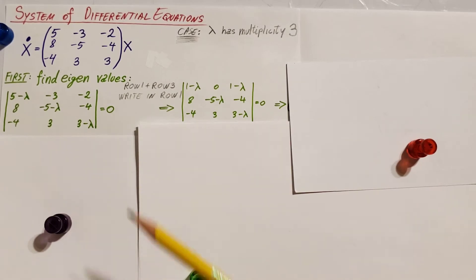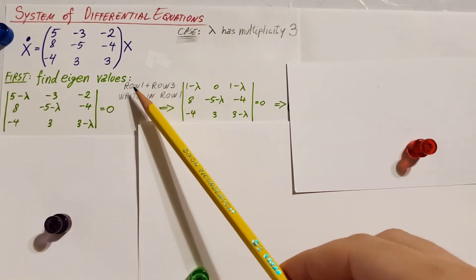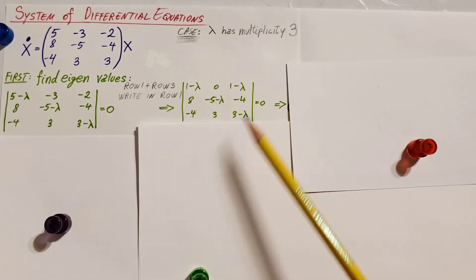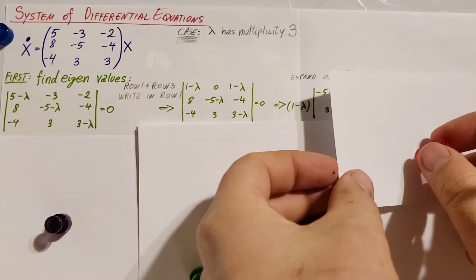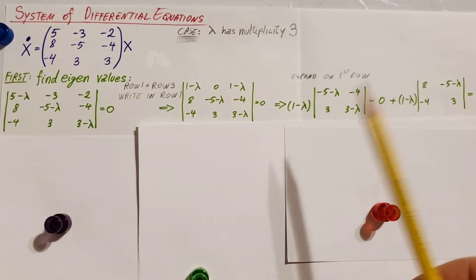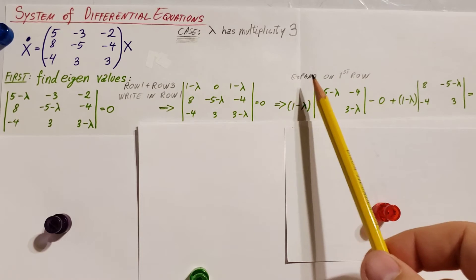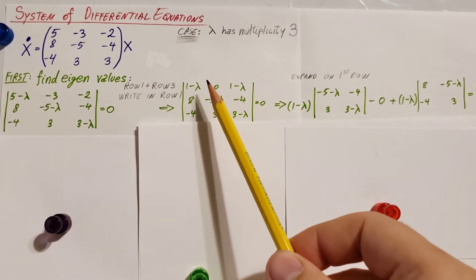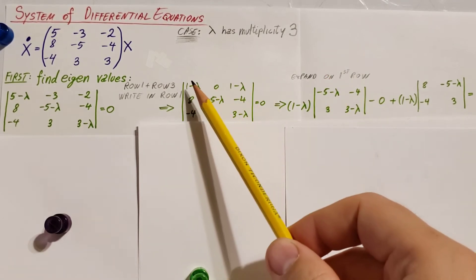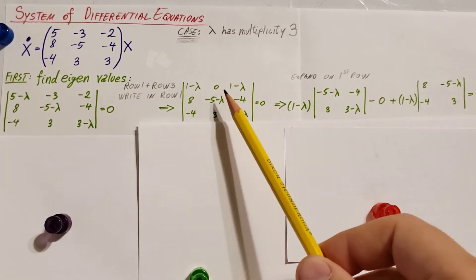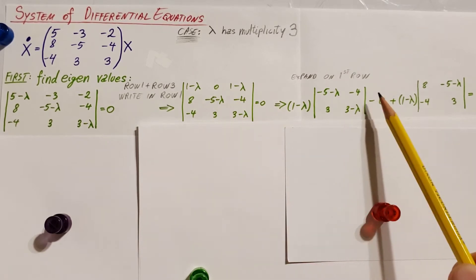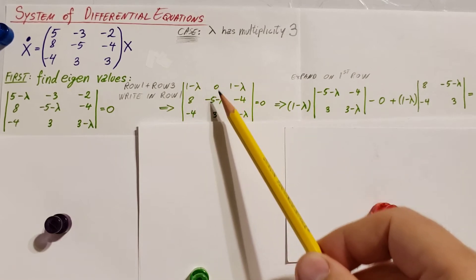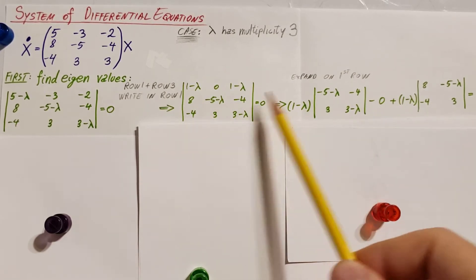Let's go over it. I'm going to take row one, add it to row three, and write it in the place of row one. That's what you can see here. From here, I'm going to expand this based on the first row. So one minus lambda times the determinant of what's left if you cross this and this out — you have this right here. Then minus zero — cross this out — the determinant would be here and here, but zero, so don't worry about it.